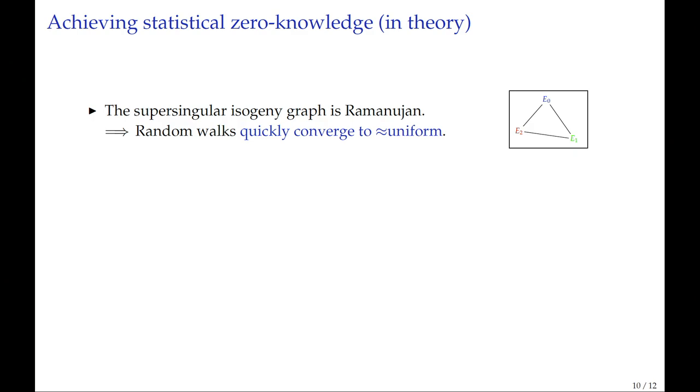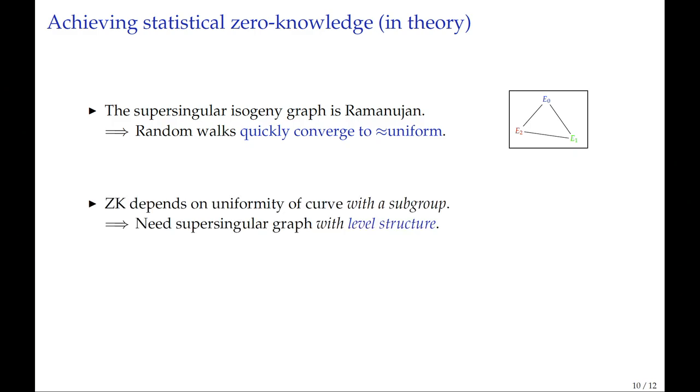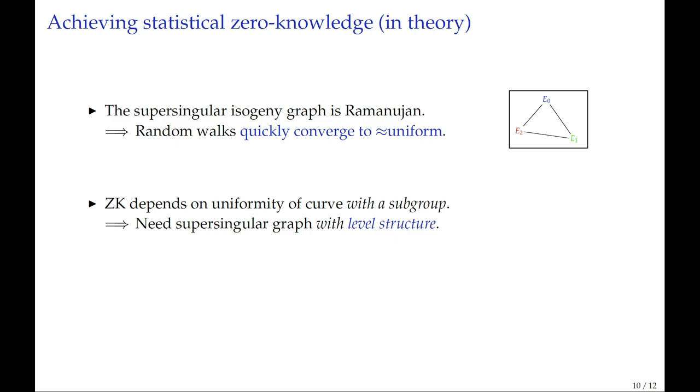Even if I'm talking about short walks, this is still significantly longer than the short isogeny that were used in the previous proofs. However, the zero-knowledge property of our zero-knowledge proof depends on the uniformity of a specific curve with an associated subgroup, which corresponds to the kernel generator of the bottom horizontal isogeny. So in order to achieve any kind of uniformity, we need to study the supersingular graph with level structure. In particular, this is the level structure associated with a particular subgroup.